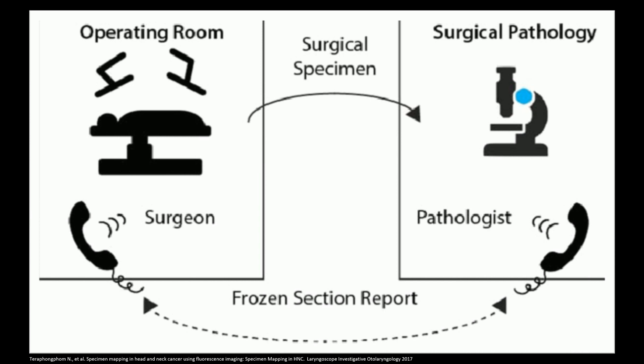So what is an intraoperative consultation? This was reviewed in a prior session, but I'll just do a very brief review. Basically, the surgeon needs help determining certain aspects of the surgery — what is the tumor, what are the margins, et cetera. The pathologists are there to help as part of a multidisciplinary team. The surgeon is doing surgery, the patient is on the table under general anesthesia, the surgeon takes a biopsy of the lesion and sends that surgical specimen to the surgical pathology laboratory where the pathologist will make a preliminary diagnosis and communicate that back to the surgeon.